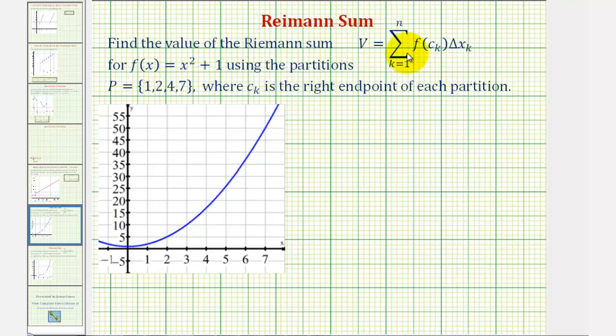We want to find the value of the Riemann sum for f(x) = x² + 1 using the partitions p equals 1, 2, 4, and 7, where c sub k, the input into the function, is the right endpoint of each partition.